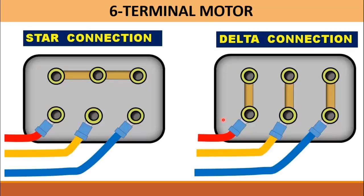This is a six terminal motor which is used for the star delta connection. Here you can see that in the star configuration, the top three terminals are shorted horizontally whereas the three incoming phases are connected to the other three terminals, and in the delta configuration, all the terminals are shorted vertically and the three phases are applied to one side of the terminal.